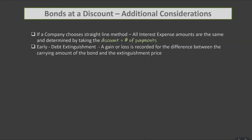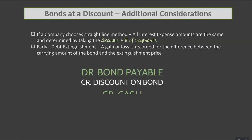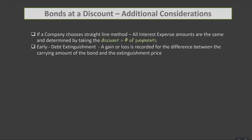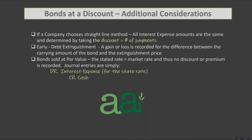The other thing is early debt extinguishment — sometimes bonds are called or extinguished early. If that's the case, you have to take both the discount and the bond off the balance sheet. You would debit the bond payable and credit the discount for whatever is on the balance sheet. There's always an extinguishment price — what you're paying the investor — which is a credit to cash. The plug between all of that is a gain or loss on extinguishment. Finally, bonds sold at par value mean the stated rate equals the market rate, so there's no discount or premium recorded. Journal entries are simply always a debit to interest expense — which equals the stated rate — and a credit to cash.